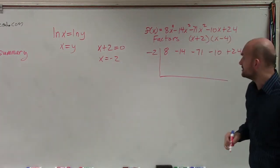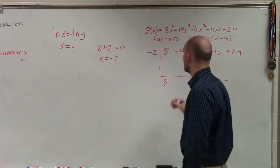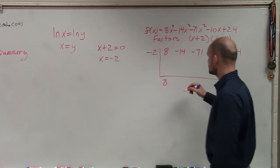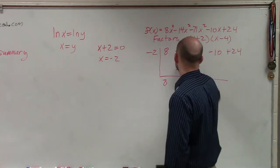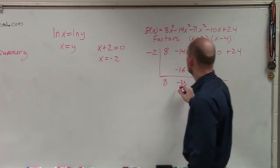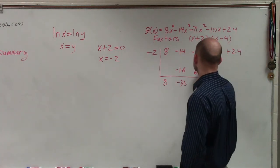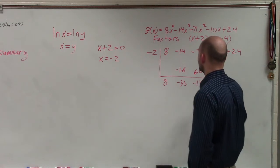And then I apply synthetic division. I bring down the 8. 8 times negative 2 is a negative 16. This becomes a negative 30. Negative 30 times negative 2 is going to be a positive 60. That becomes a negative 11.